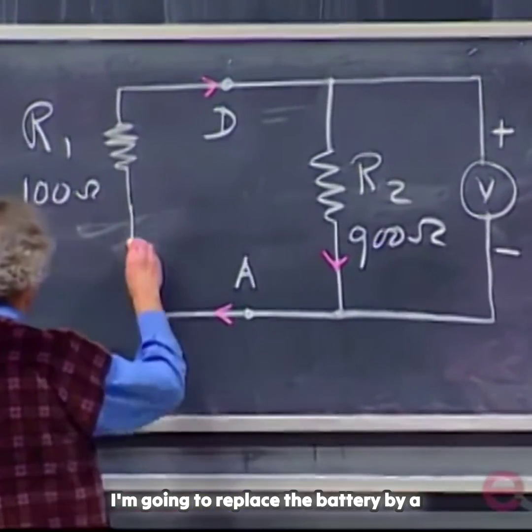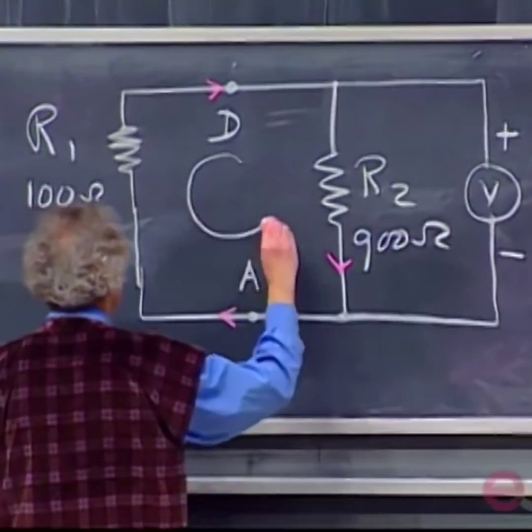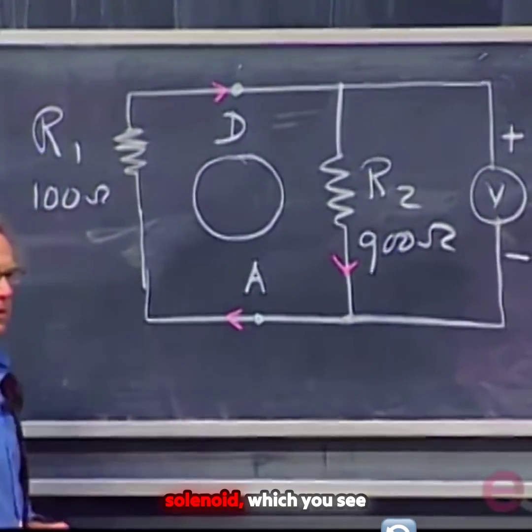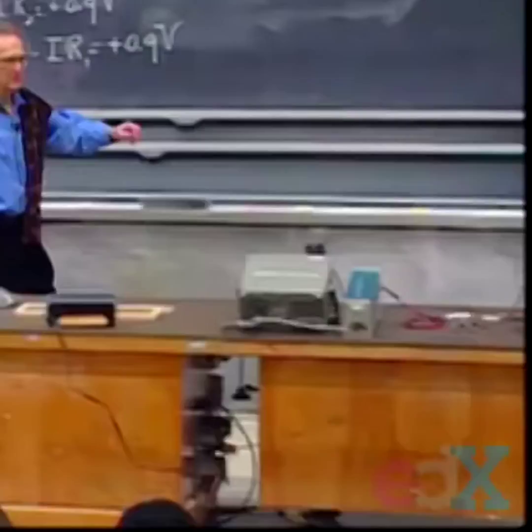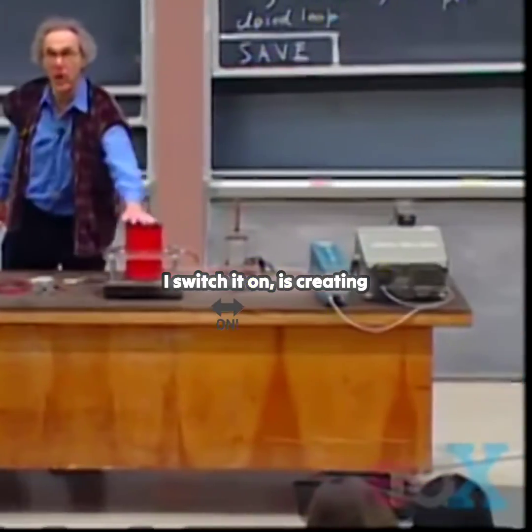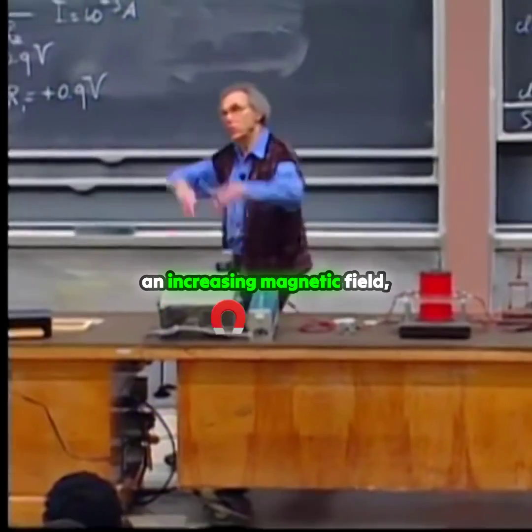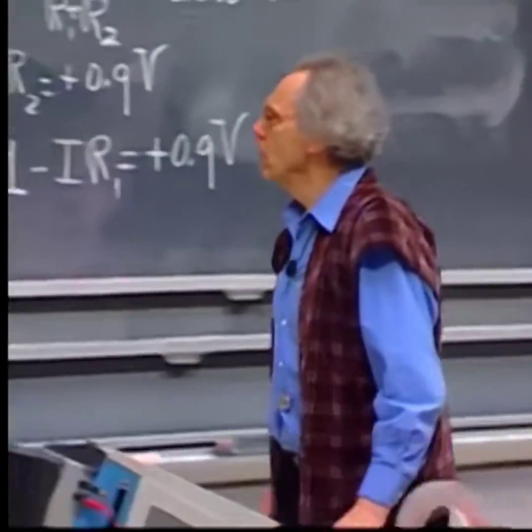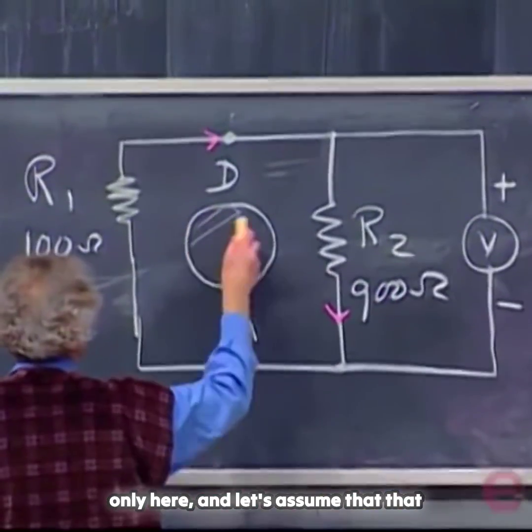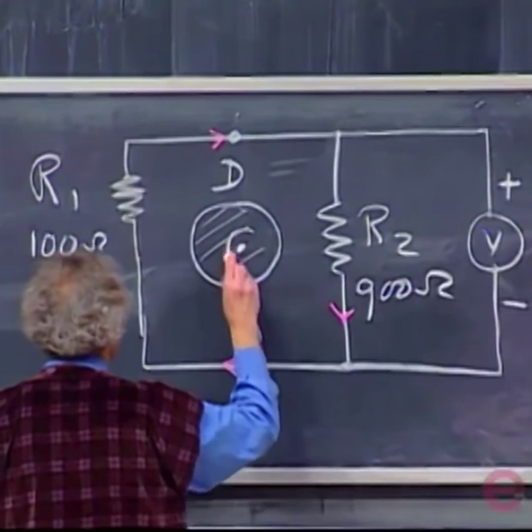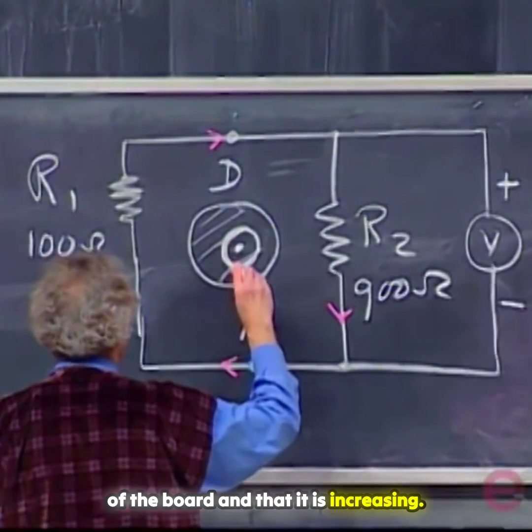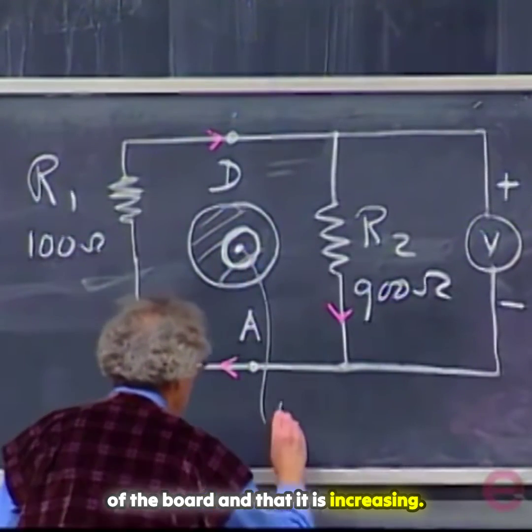I'm going to replace the battery by a solenoid, which you see right here. And this solenoid, when I switch it on, is creating an increasing magnetic field only here. And let's assume that that increasing magnetic field is coming out of the board and that it is increasing.